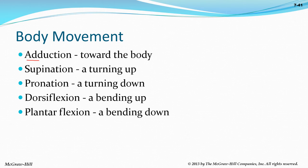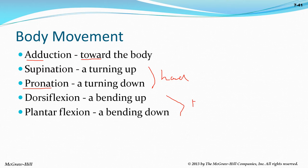The bicep does two things: it flexes the arm and supinates — twists the palm upward. Adduction draws toward the body. Supination is turning up; pronation is turning down — usually referring to the hands. Dorsiflexion and plantar flexion refer to the feet — pointing toes up versus pointing toes down.